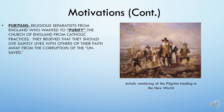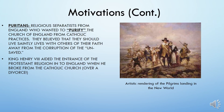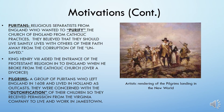The Puritans wanted to purify the Church of England. They thought they should live saintly lives with others of their own faith and keep away from the corruption of the unsaved. King Henry VIII aided the entrance of the Protestant religion to England when he broke from the Catholic Church. The Pilgrims left, saying this was not for them. Most people think they came directly to the New World, but they actually lived in the Netherlands for a while, in Holland. They were concerned their children were becoming too Dutch, so they got permission from the Virginia Company to come over and work in Jamestown. Here on the right you see a typical artist's rendition of Pilgrims landing in the New World.